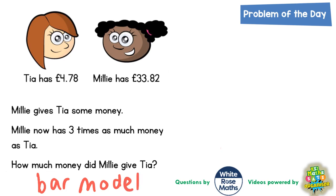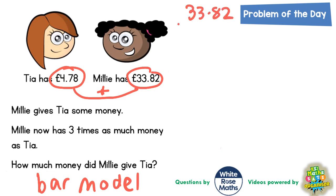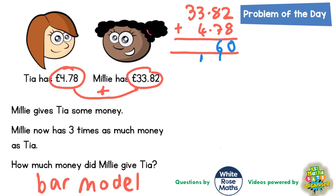The first thing we need to do is figure out how much they started with altogether, so we're going to add these two amounts together. £33.82 add £4.78 — we can't do anything until we figure out the total. 2 plus 8 is 10, put the 0 and carry the 1. 8 plus 7 is 15, plus 1 is 16, put the 6 and carry the 1. 3 plus 4 plus 1 is 8. 3 plus nothing is 3. So they had £38.60 as their total altogether.